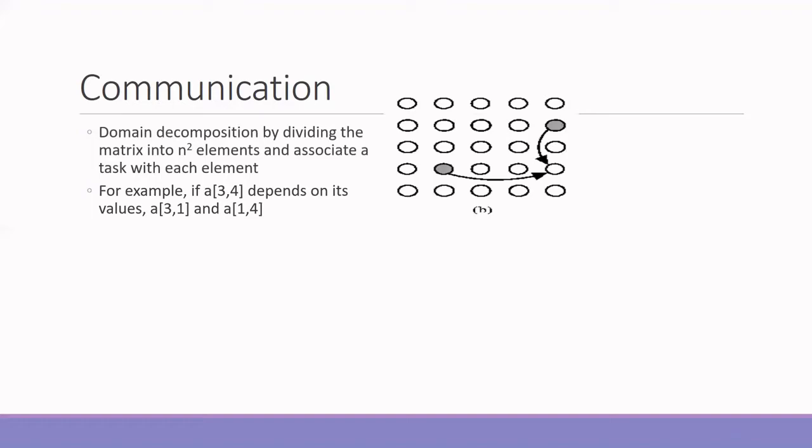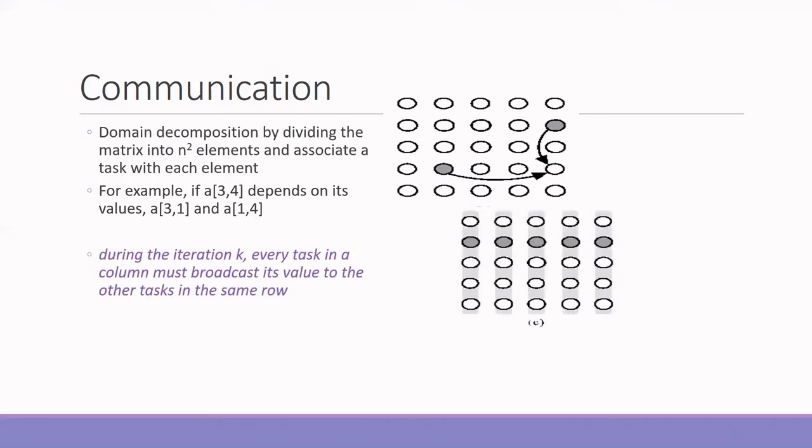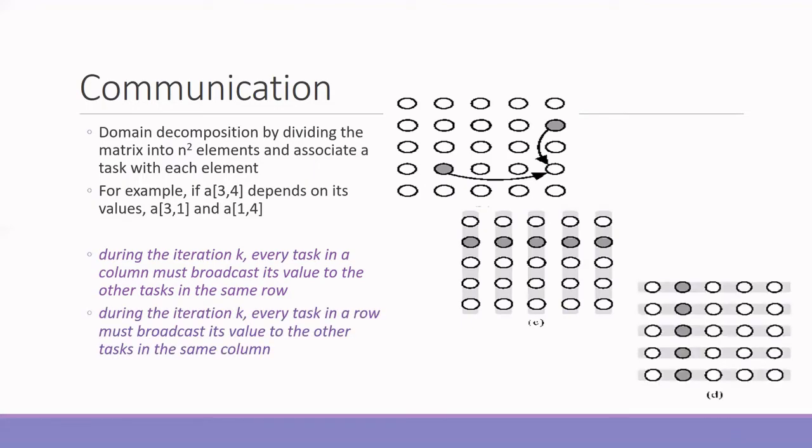So we will figure out the communication part. Now, you know that when a particular element [3,4], when we are going to update the value of [3,4], it depends on the value of [3,1] and [1,4]. So this is the type of communication happening here. So when we divide the data and give it to different processes, what we need to do is we have to broadcast that particular information to other processes as well. For that, what we are going to do is during the iteration K, every task in that particular column must broadcast its value to the other task in the same row. And again, during the iteration K, what we have to do is every task in a row must broadcast its value to the other task in the same column. So this is the communication or this is the type of broadcasting that happens in Floyd's algorithm.